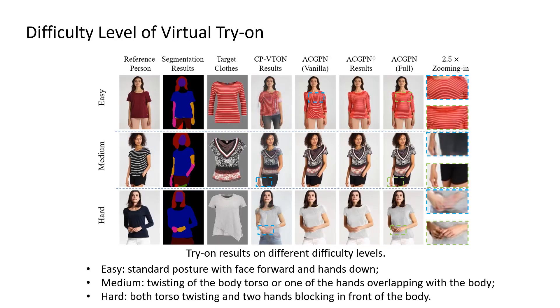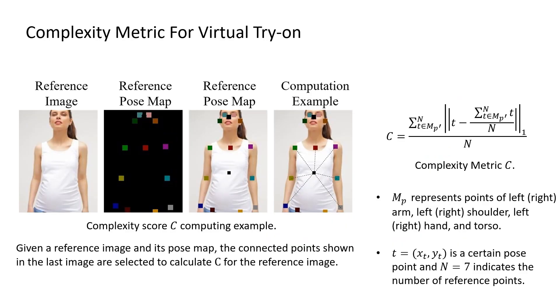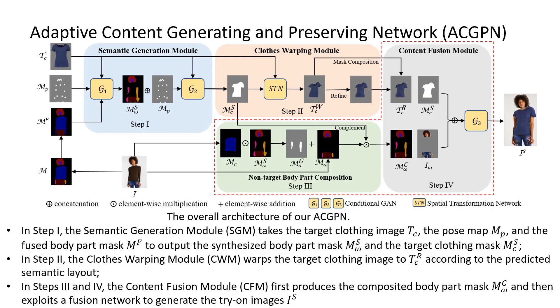We divide the VITON dataset into three subsets of difficulty levels according to the human pose in 2D reference images. Here we show how to calculate the complexity score.